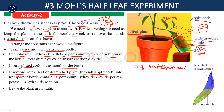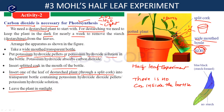No air can escape inside. But the carbon dioxide already present in the bottle will be absorbed by the potassium hydroxide. So now inside the bottle there is no carbon dioxide — we have removed carbon dioxide from the leaf's environment. Now leave the plant in sunlight. Water is available in the pot. Sunlight is also available. But carbon dioxide is not available.